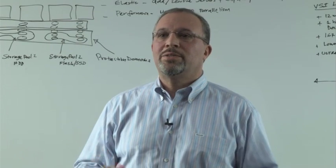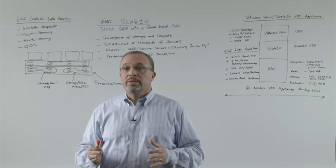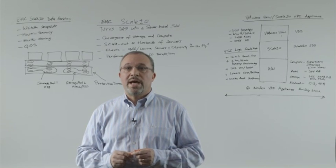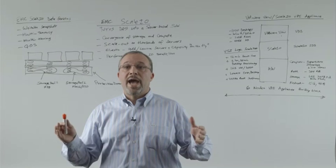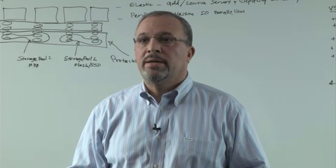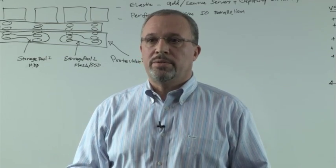EMC's SCALE.IO turns DAS into a server-based SAN. Some of the features of SCALE.IO include convergence of storage and compute, scale out to thousands of servers, elasticity, you can add and remove servers and capacity on the fly, and aggregation of performance with massive I/O parallelism across all nodes.